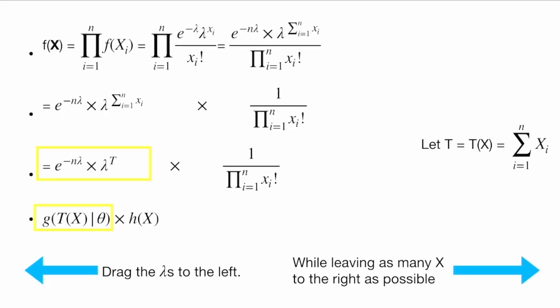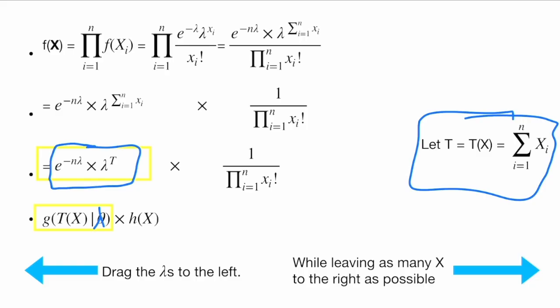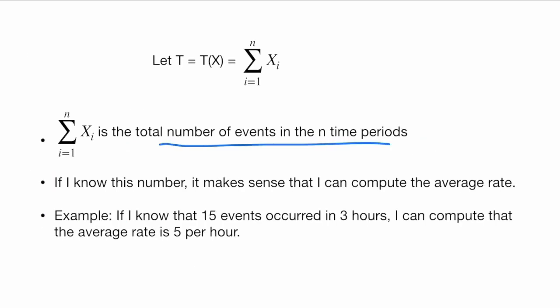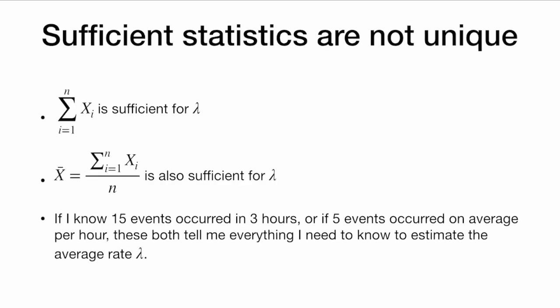We see that we have our function of t(x) and theta — in our case, lambda — which is only a function of lambda and t, and not x in any other way. Then we have the part h(x) which only involves x and not lambda. So if I know the total number of events that occurred in n time periods, I can compute the average rate. For example, if 15 events occurred in three hours, the average rate is five per hour. Sufficient statistics are not unique: the sum of the xi is sufficient for lambda, but also the average number of events x-bar is also sufficient for lambda. Both tell me everything I need to know to estimate the average rate lambda.